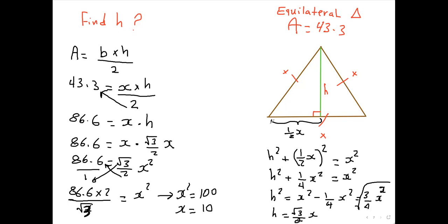So if x equals 10, and you want to find the height, you have this equation right here, and it's 86.6 equals x, which we already found to be 10, times h, and now you divide both sides by 10, you get 8.66 equals h. And that's the height of this triangle right here.